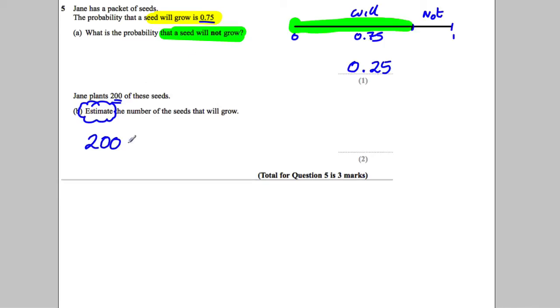So we're trying to work out 200 multiplied by 0.75. Now you should know that 0.75 is 3 quarters, so this is the same as 200 multiplied by 3 quarters, which is the same as 3 quarters of 200.